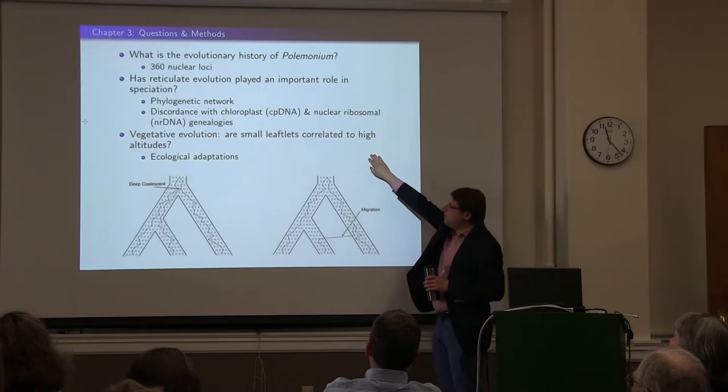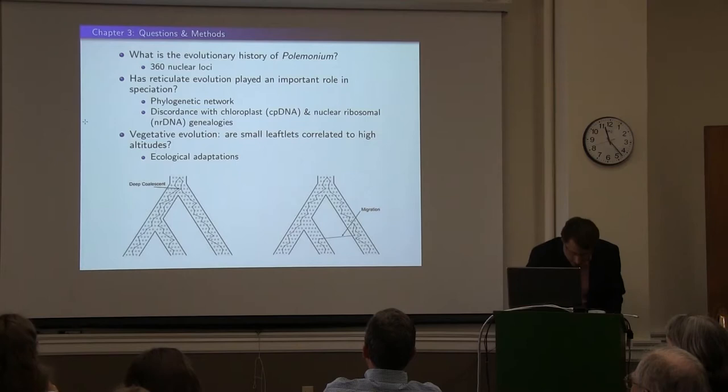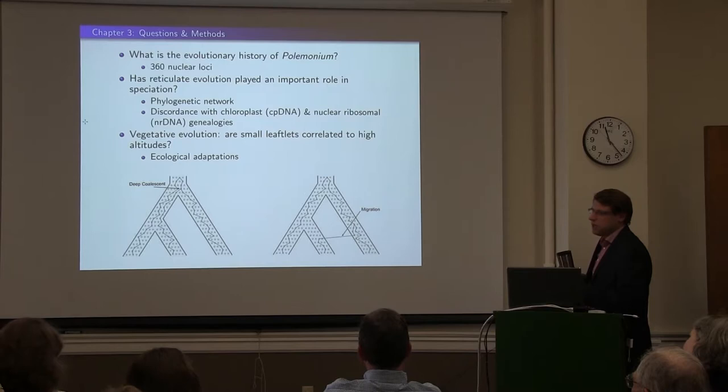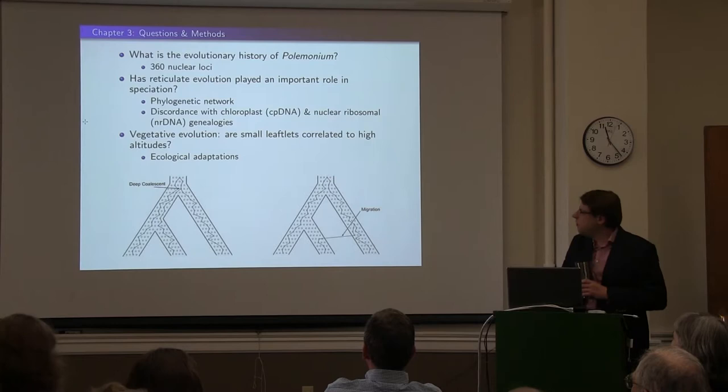Small and twice compound leaflets are correlated to high altitudes. The reasoning is that at higher altitudes, you have less available nitrogen and less available moisture because of cold climates and evapotranspiration. These small leaflets might help keep the plant warm, reduce water loss, and be more efficient.